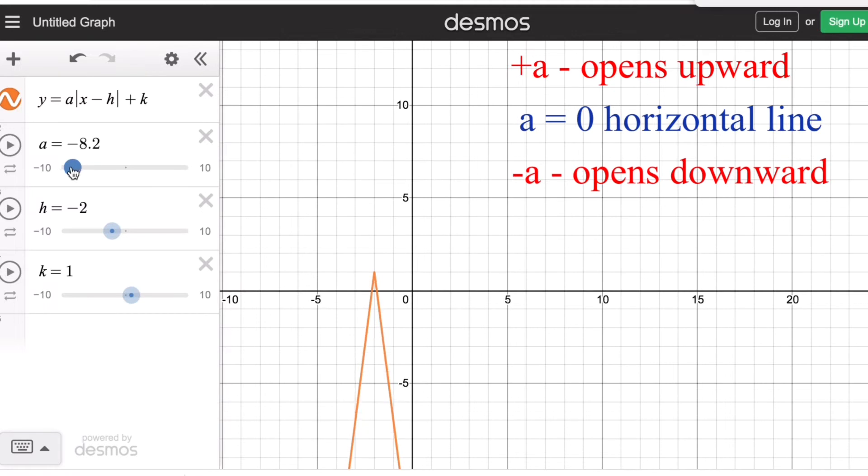We also remember that a is called a stretch factor, meaning it makes the graph vertically stretch, which makes it narrower, or horizontally compressed, which makes it wider.